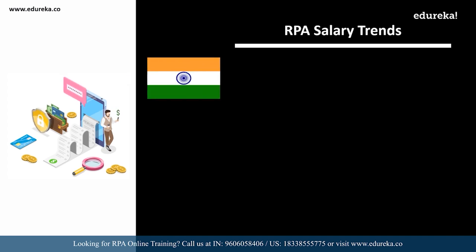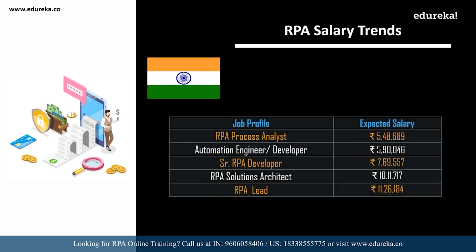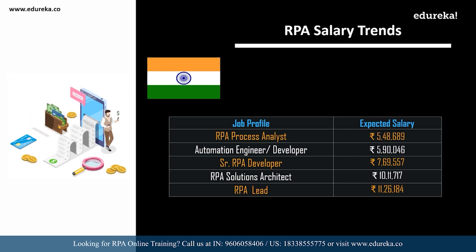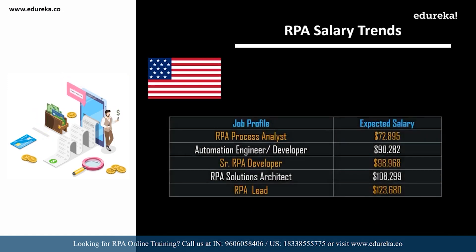Looking at India first, according to Indeed.com: an RPA process analyst can expect around 5,48,000 per annum; an automation engineer or developer around 5,90,000; a senior RPA developer around 7,69,000; an RPA solutions architect around 10,11,000; and an RPA lead around 11,26,000. In the USA, an RPA process analyst can expect around 72,000 dollars; an automation developer around 90,000 dollars; a senior RPA developer around 98,000 dollars; an RPA solutions architect around 1,00,000 dollars; and an RPA lead around 1,23,000 dollars.